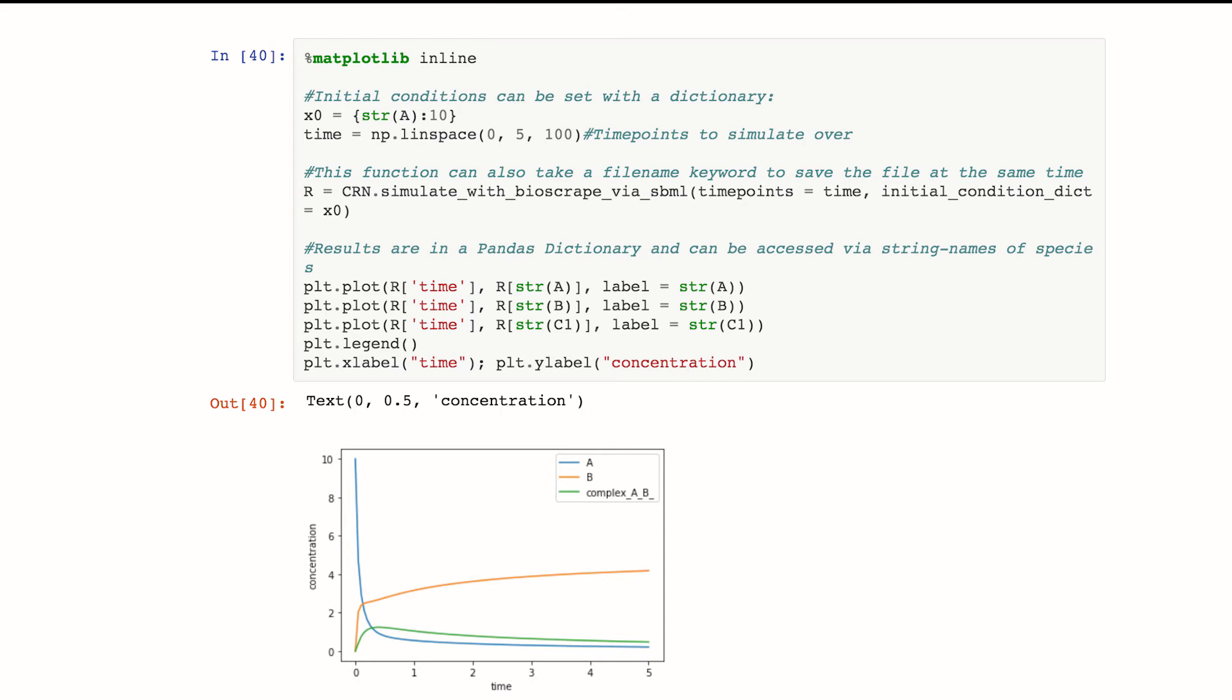I make my initial condition dictionary. A dictionary is a mapping, if you don't know. So it's saying that I take the string representation of my species A, and if I ask my dictionary for that string representation of A, it's going to return 10. So this is telling me that the initial concentration of A is 10.